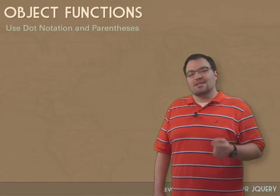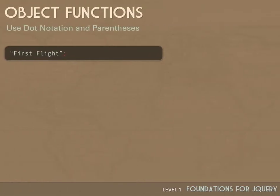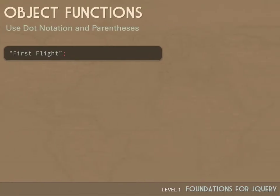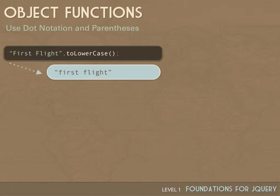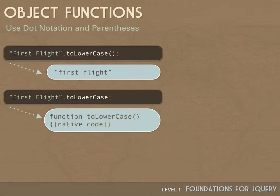We've looked at global functions. Now let's look at object functions — those functions that get called on a specific instance. Here I've got the string 'first flight'. If I add the function toLowerCase, I call dot toLowerCase with the parens. That's going to execute the function and give me back 'first flight' with all letters converted to lowercase. With parentheses in JavaScript — if you leave the parens off, the function doesn't get executed; it returns the function itself to you.